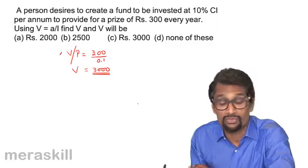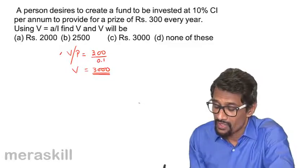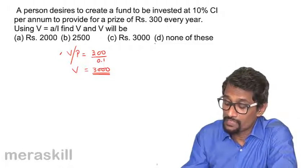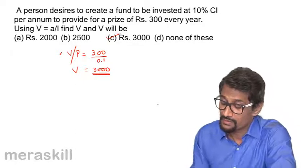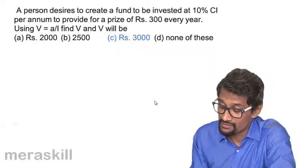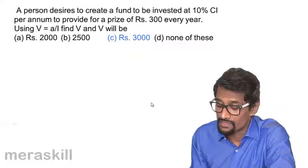that is the present value you need to deposit so that you can provide 300 rupees per year. The answer is 3000 rupees, so this is the correct answer: 3000.